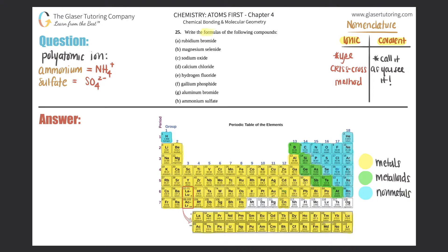Number 25: write the formulas of the following compounds, parts a through h. In problems 23 and 24, we took compounds and wrote the compound name, but in this case we're going backwards — they gave us the compound name and now we just have to write the formula. Two different ways. You always have to start from the top and know first whether it's ionic or covalent, then use that information to get the formula.